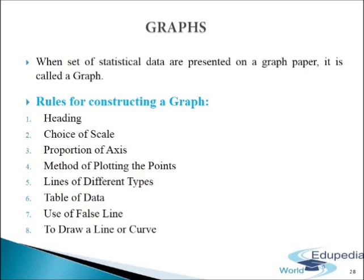Rules for constructing a graph. The following points must be kept in mind while constructing a graph. First, heading: every graph must have a suitable and precise heading. The heading must be self-explanatory about the nature of information in the graph. Second, choice of scale: one should fix an appropriate scale for the presentation of data. An appropriate scale is one by which the entire data can be easily represented.